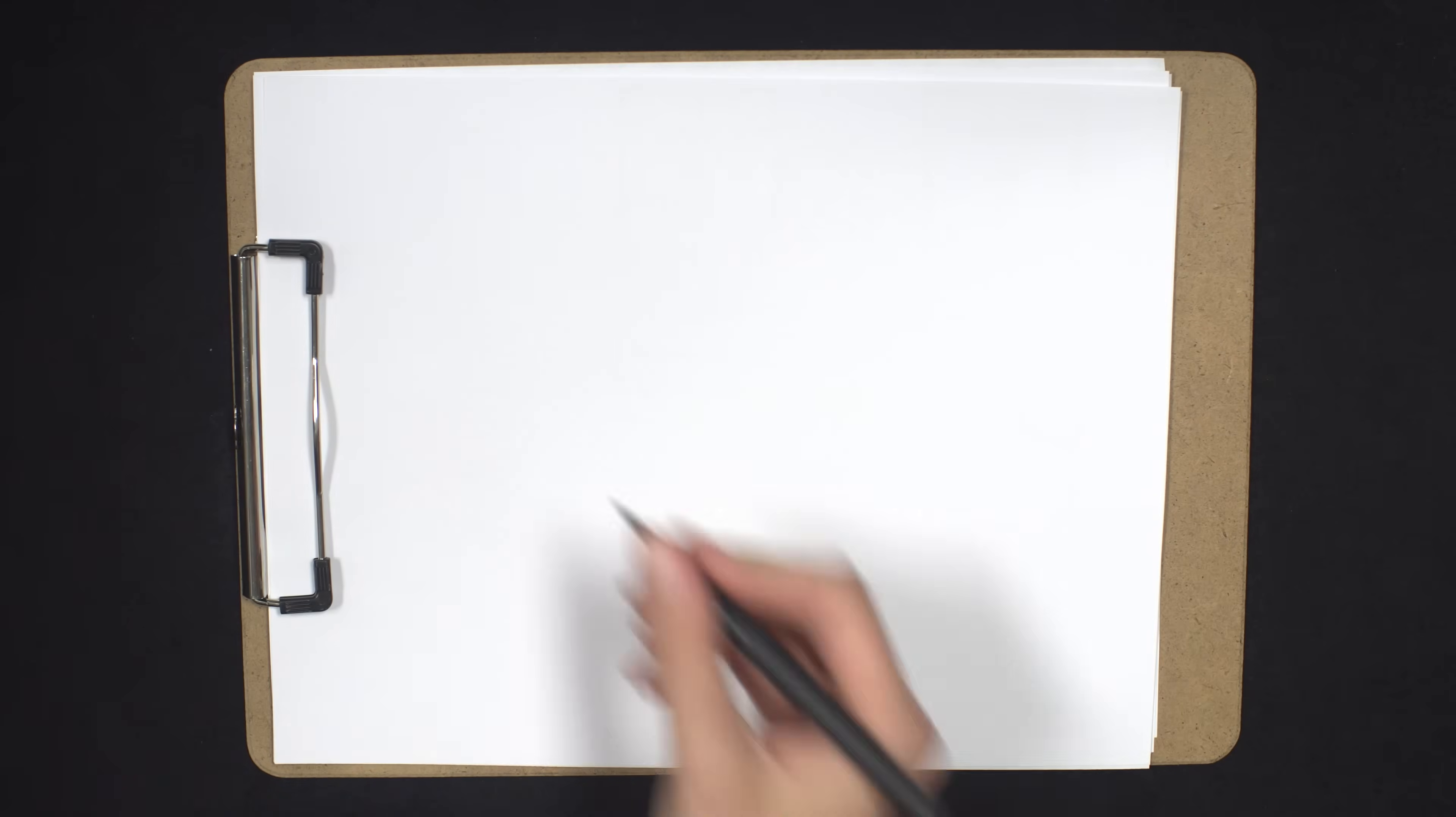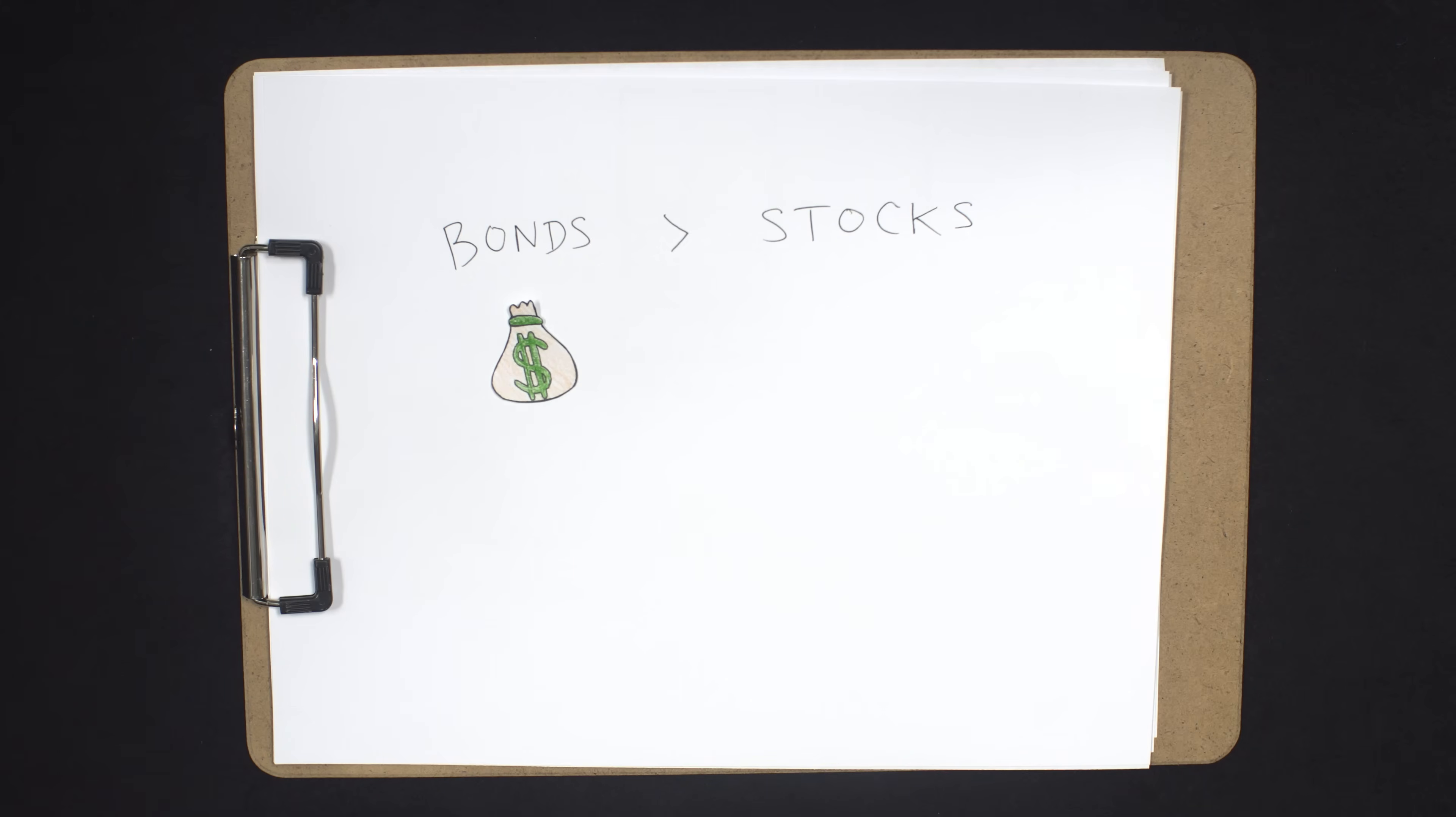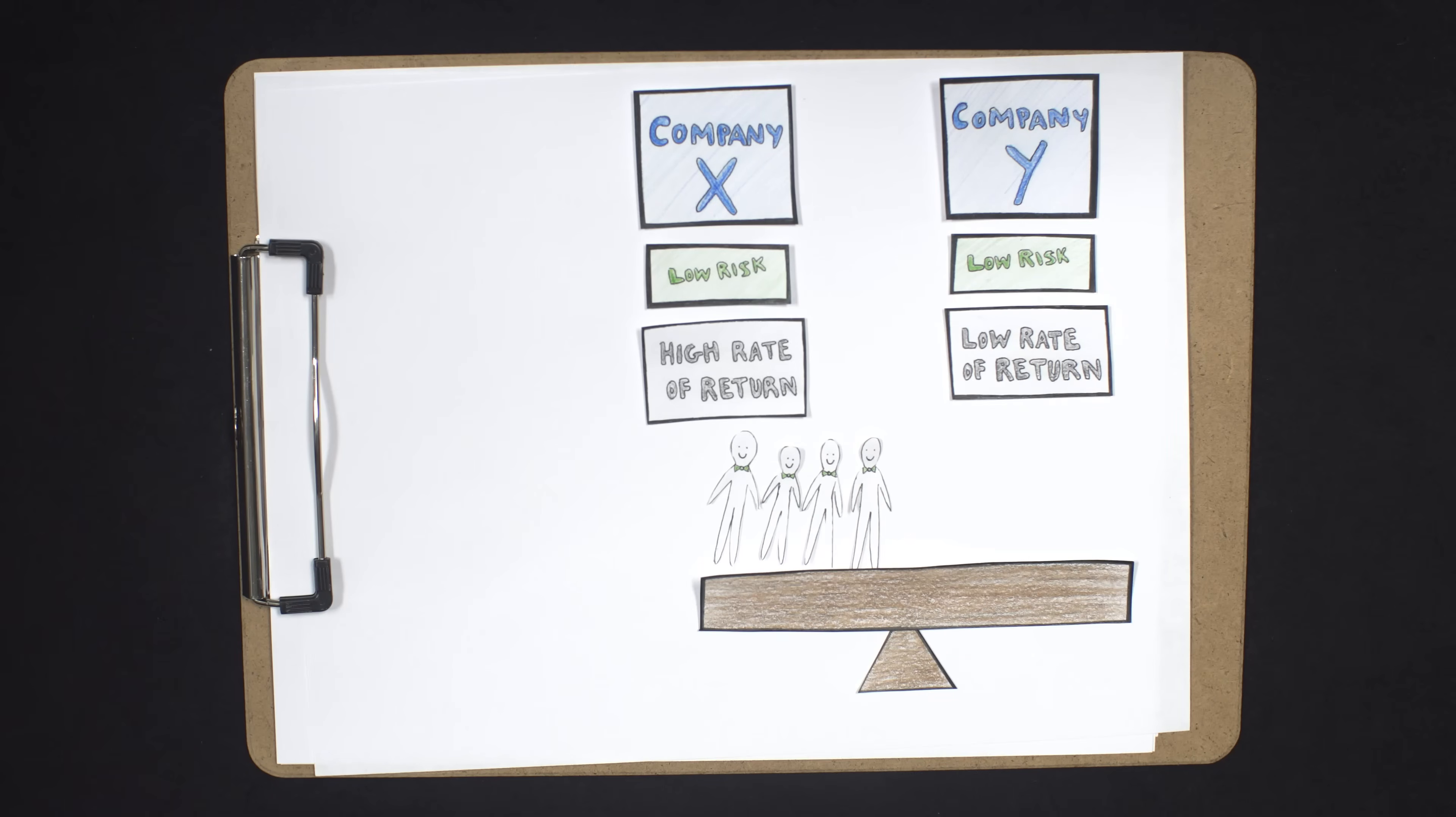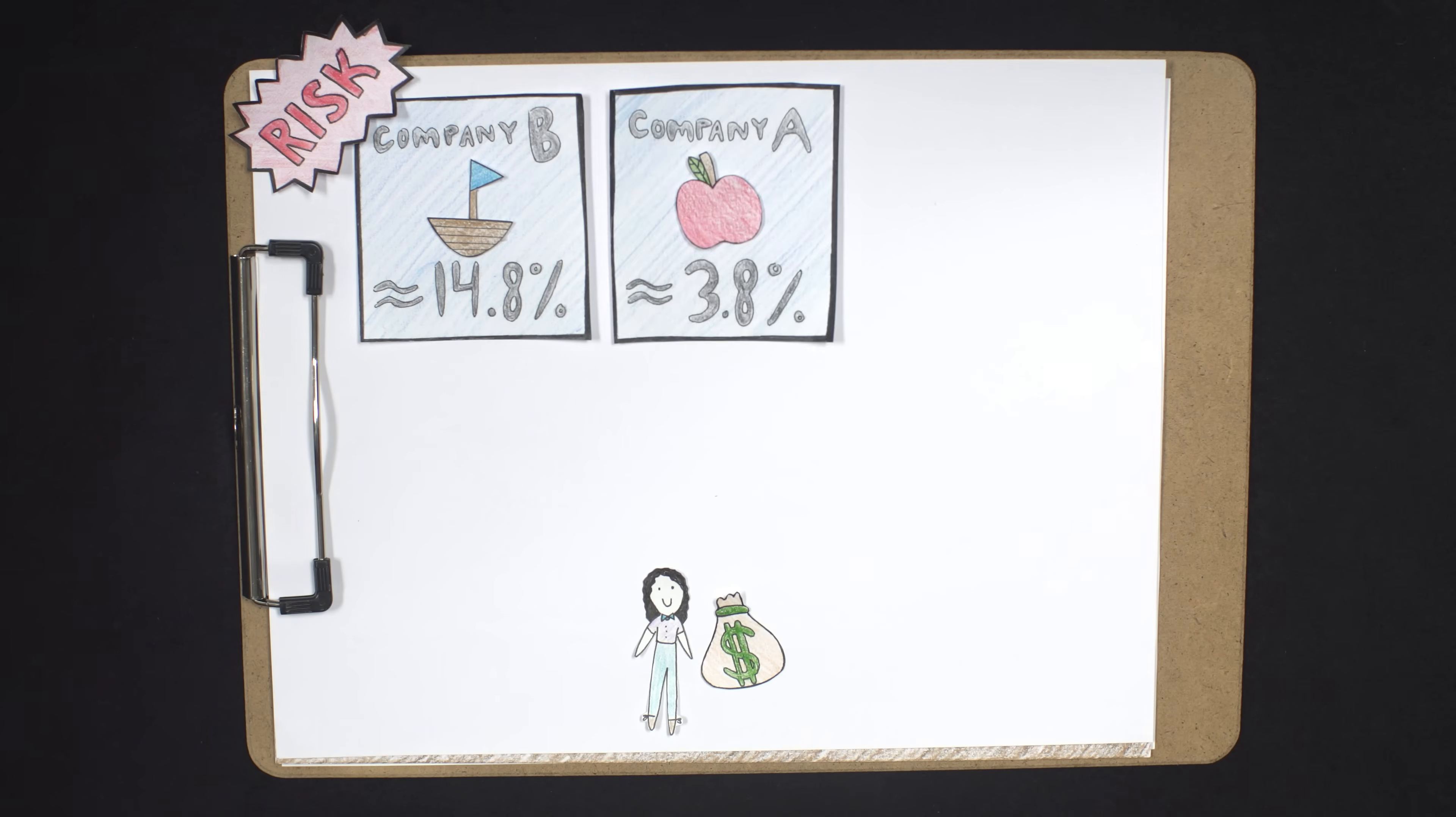Risk! Even though bonds are safer than stockholders, because bondholders are paid before shareholders, there can still be risk of default. Equally risky assets must have the same rate of return. If they didn't, everyone would buy the bond with a higher rate of return until the price is equalized. So we basically know that Company B has a lot more risk than the other two companies.